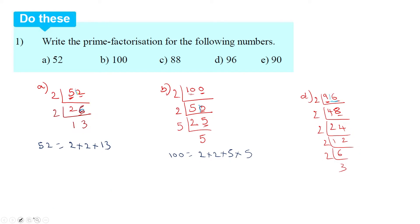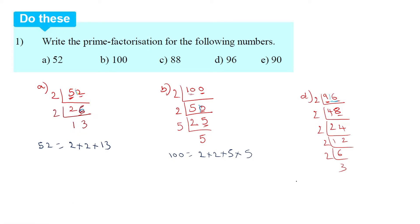So 96 is equal to 2 into 2 into 2 into 2 into 2 into 3. So we multiply to get 96. We will finish the division method here.